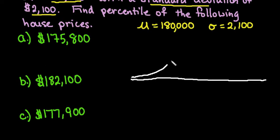We are going to draw out a curve as best you can. We're always going to center it at the mean. So I'm going to say that this is $180,000. Just to save space, I'm going to use 180 for $180,000. If you want to write out all the zeros, you can.